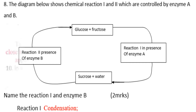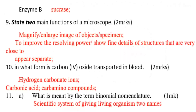The main function of a microscope is to magnify and enlarge images, objects, or specimens, to improve resolving power, and to show fine details of structures that are very close so they appear separate. Number ten: in what form is carbon dioxide transported in blood?